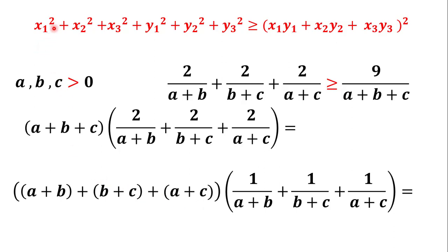We put x₁² equal to (a+b), so x₁ equals the square root of (a+b). We put x₂² equal to (b+c), so x₂ equals the square root of (b+c), and x₃ equals the square root of (a+c). For the y values, we put y₁² equal to 1 over (a+b), so y₁ equals 1 over the square root of (a+b). Similarly, y₂ equals 1 over the square root of (b+c), and y₃ equals 1 over the square root of (a+c).